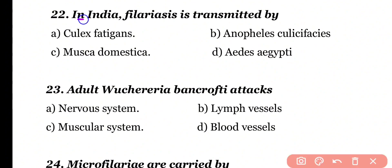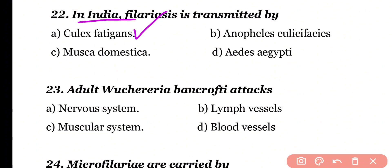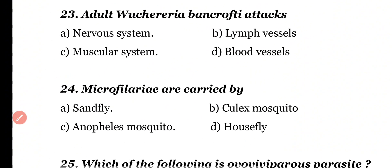Question 22: In India, filariasis is transmitted by Culex fatigans, Anopheles culicifacies, Musca domestica, or Aedes aegypti. Correct answer is option A. In India, filariasis is transmitted by the Culex fatigans species.